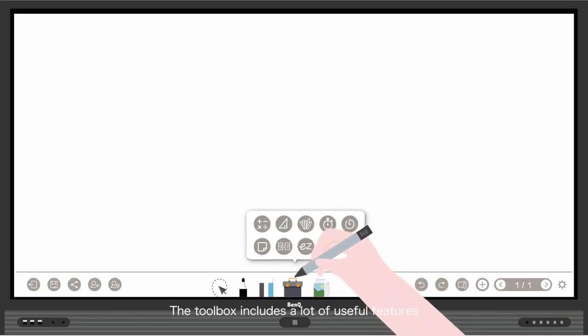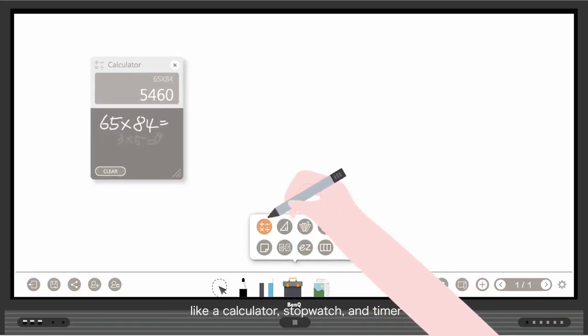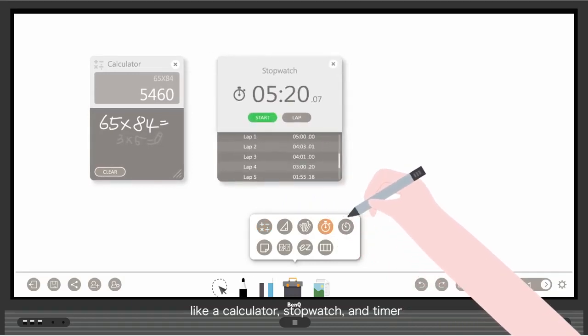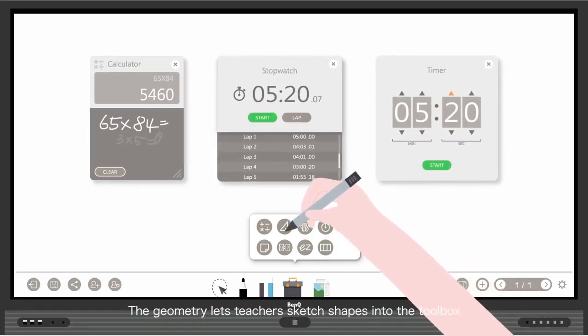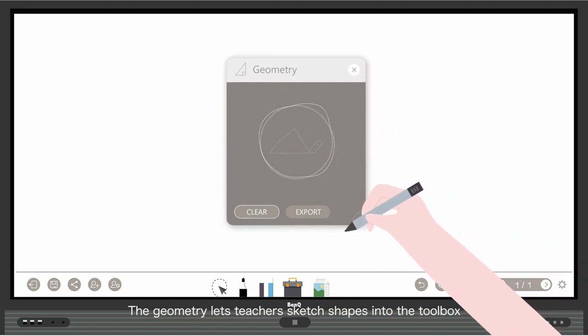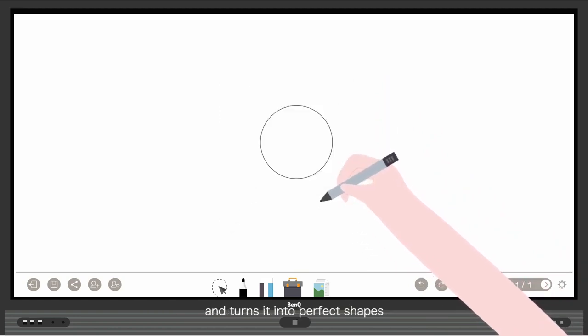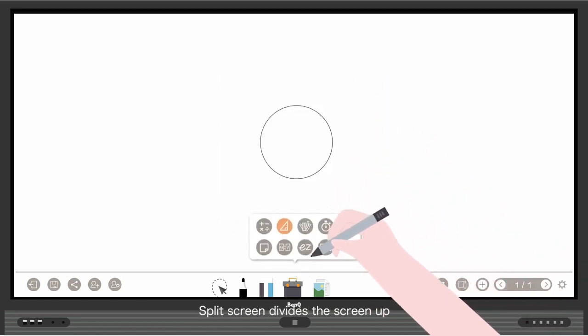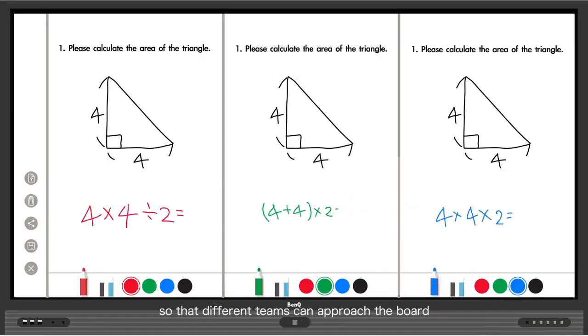The toolbox includes a lot of useful features like a calculator, stopwatch, and timer. The geometry tool lets teachers sketch shapes into the toolbox and turns them into perfect shapes. Split screen divides the screen up so that different teams can approach the board to share their different ideas.